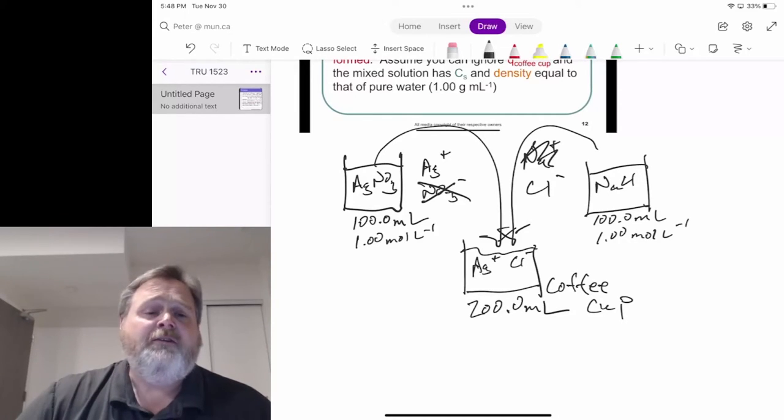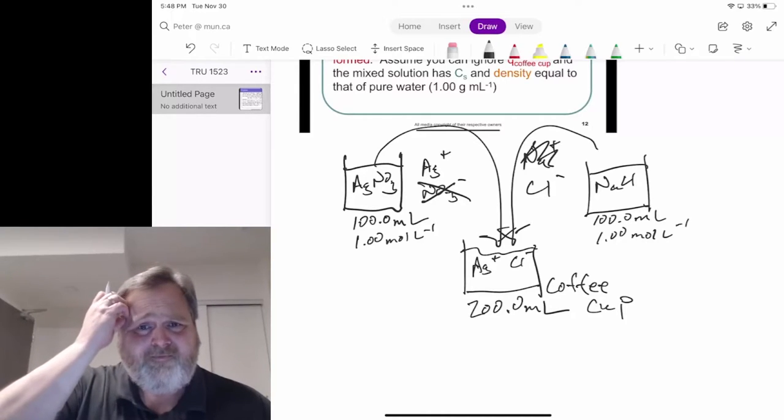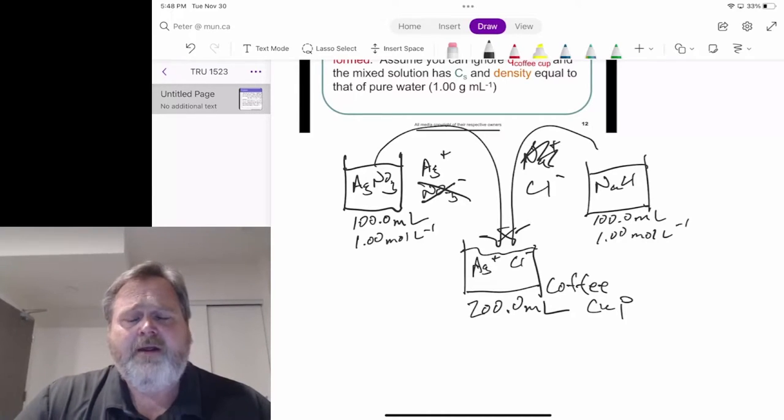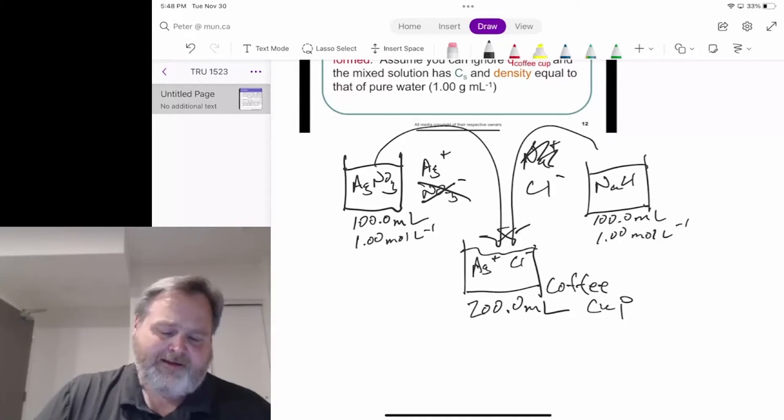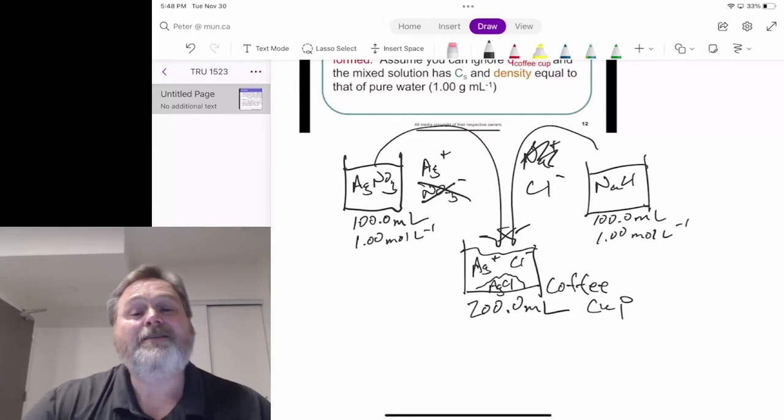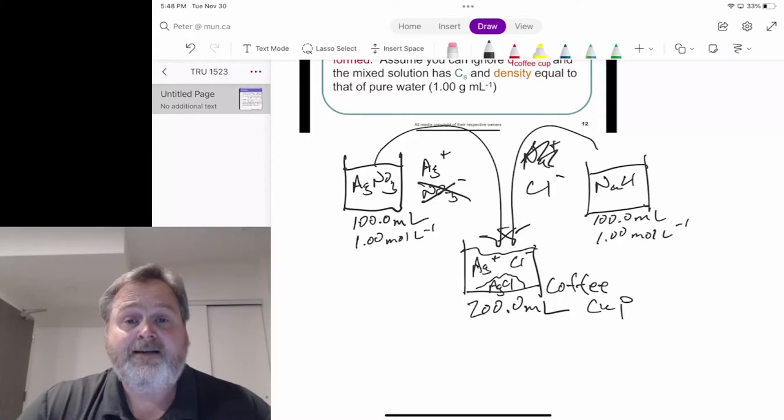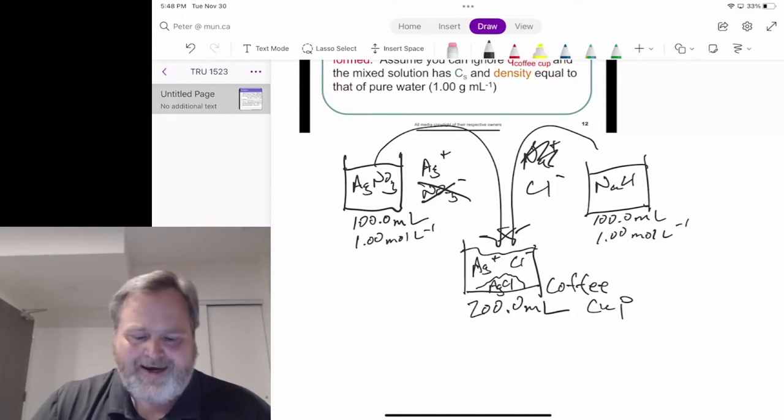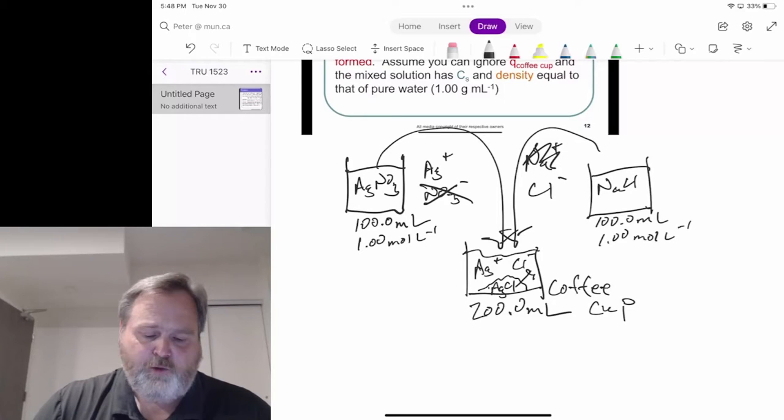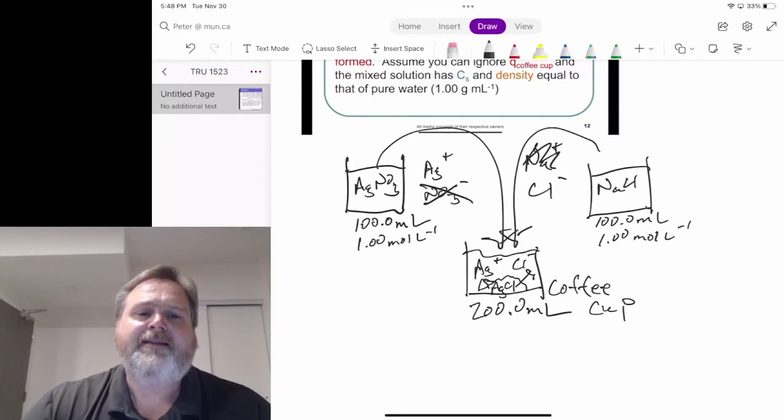This is telling us everything we need to know to understand the problem. Those ions are going to combine together and we're going to start forming silver chloride solid. It's that formation of solid that's ultimately going to release heat into the water.